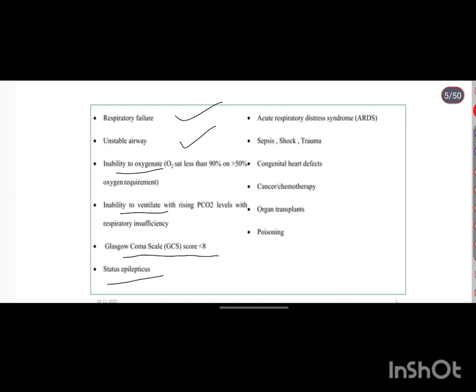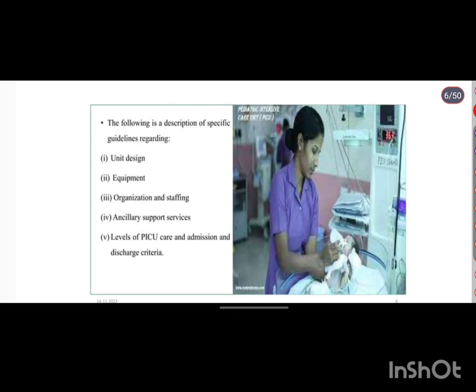Further indications include acute respiratory distress syndrome, sepsis, shock, trauma, congenital heart disease, cancer chemotherapy, organ transplants, and poisoning. When asked about the organizational structure and infrastructure of the PICU, you should describe unit design, equipment, organization, staffing, ancillary supports, levels of PICU care, and discharge.